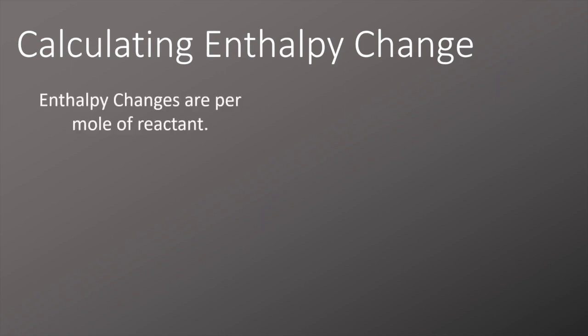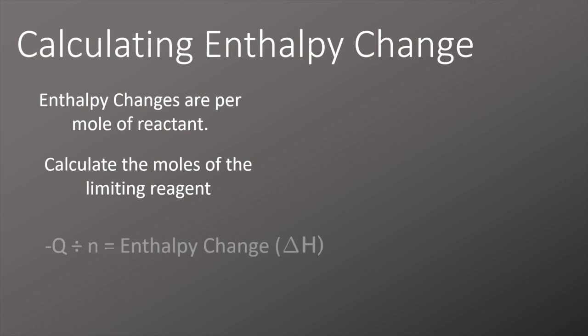Enthalpy changes are for one mole of the reactant, so we need to identify the limiting reagent in the process and then work out the number of moles of that limiting reagent. Once we have that, we can do minus Q divided by n, where n is the number of moles of the limiting reagent and Q is the energy transfer which we worked out on the last slide. The minus bit in front of it means that we're flipping around, so before we've measured the energy change in the surroundings, we need to now have the energy change in the system.